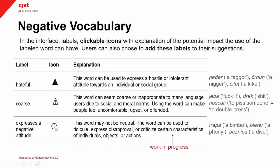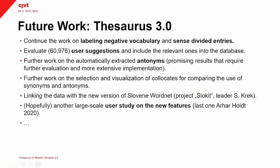As you saw in the video, we also gave users the option to choose among these three labels. As I said, we want to continue working on labeling negative vocabulary for this third group. We also want to continue working on sense-divided entries — we have the guidelines, the methodology, and the pilot data, so this should be easier now to continue. Very importantly, we want to start evaluating user suggestions as editors: at the moment we have almost 61,000 user-suggested synonyms, which I think really shows the success of this approach. Right now user suggestions appear in the interface but don't get automatically included in the dictionary database, so there will be editorial work to decide which ones to include.